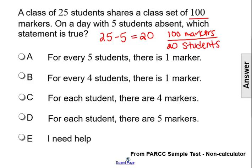Now, if we look at our option choices, they're talking about unit rates. For every 5 students, there is 1 marker. For every 4 students, there is 1 marker. For each student, there are 4 markers. For each student, there are 5 markers.